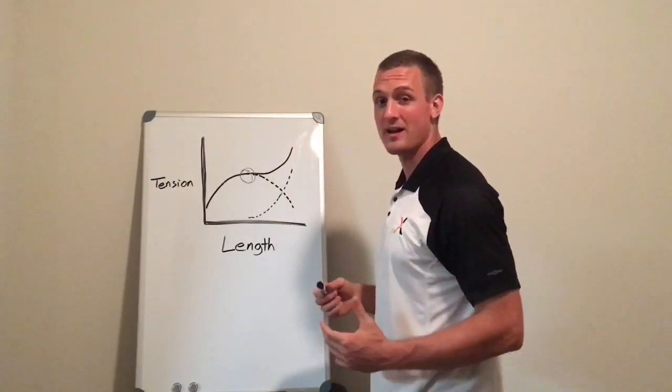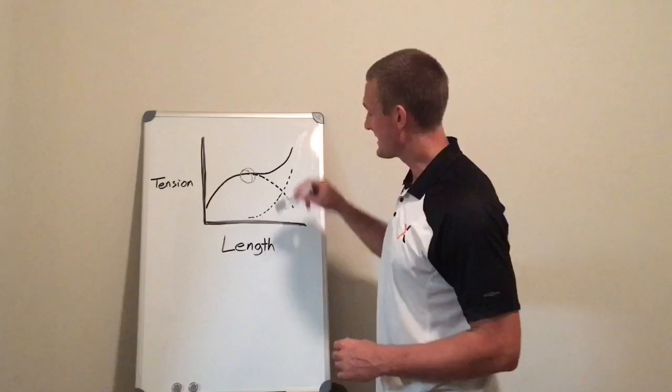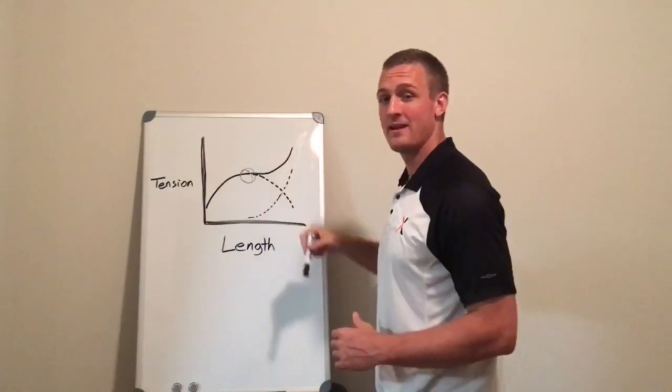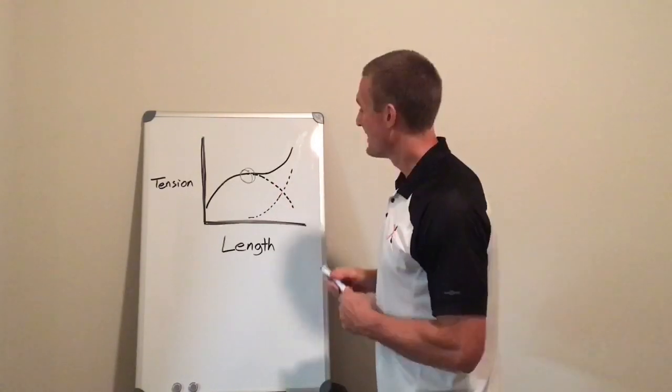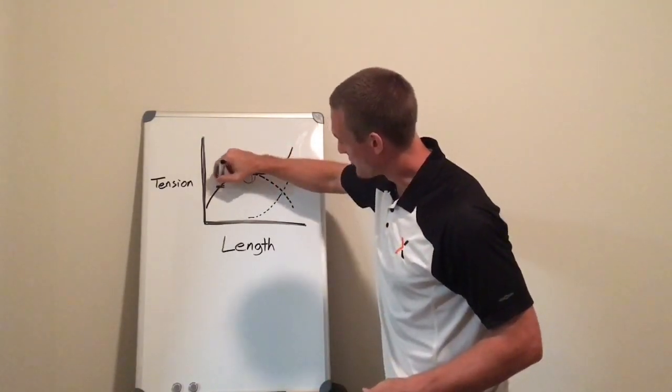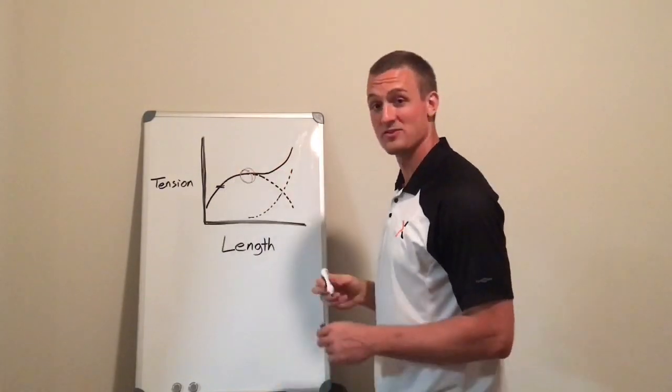So if I do a deep squat into full knee flexion, I'm gonna get a lot of muscle tension from that. If I only go to 90 degrees or some higher partial squat, that means I'm going to be operating over here somewhere with a lower level of muscle tension.